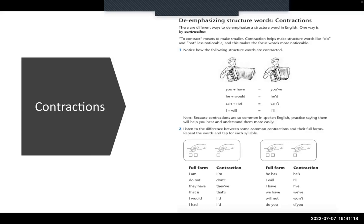You can see, like in the second example, 'I am' is two syllables, whereas when it's a contraction it's 'I'm'. 'Do not' becomes 'don't', 'they have' becomes 'they've', 'that is' becomes 'that's', 'I would' and 'I had' both become 'I'd'.